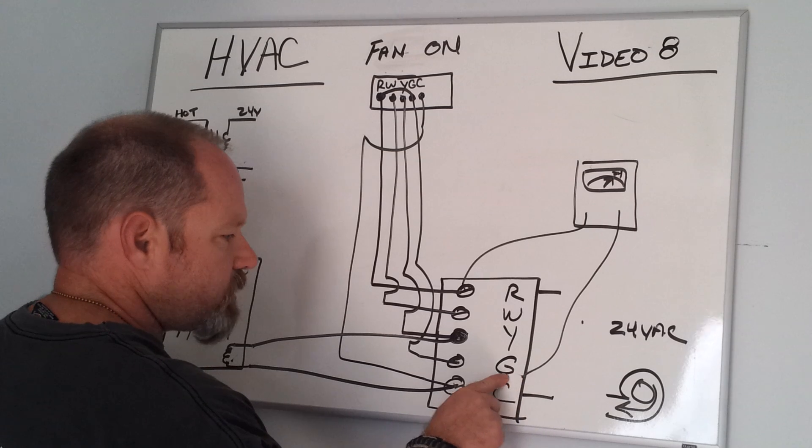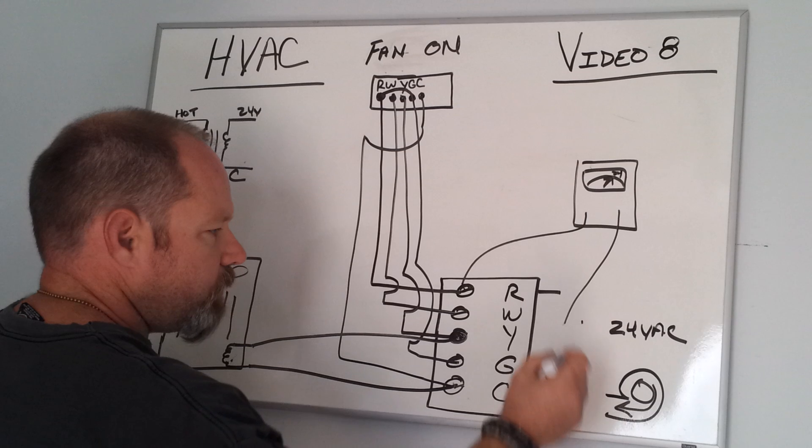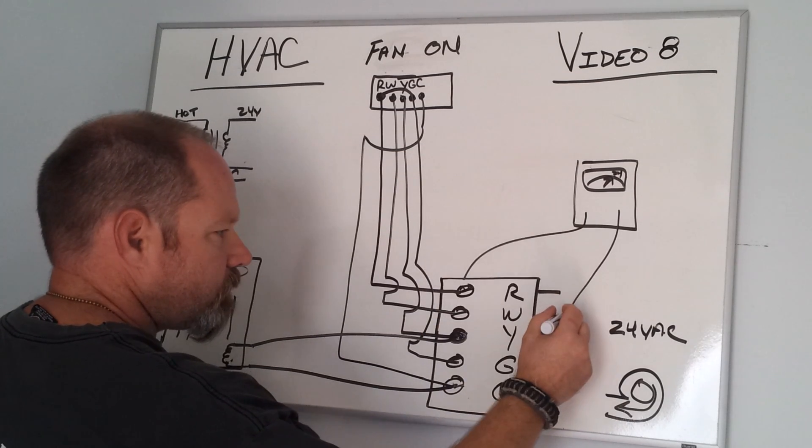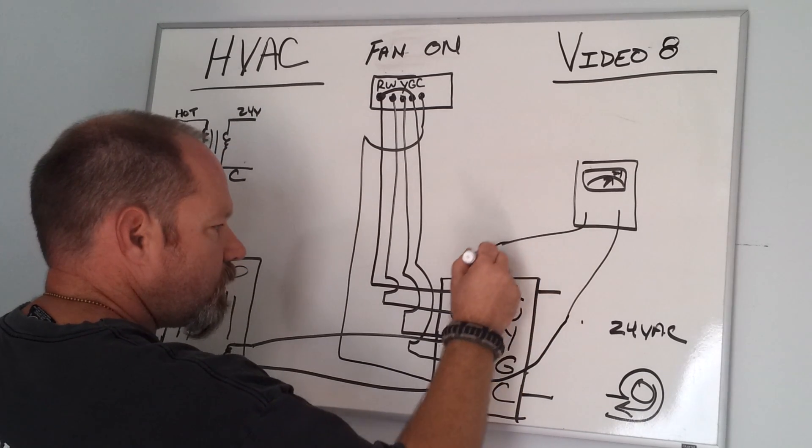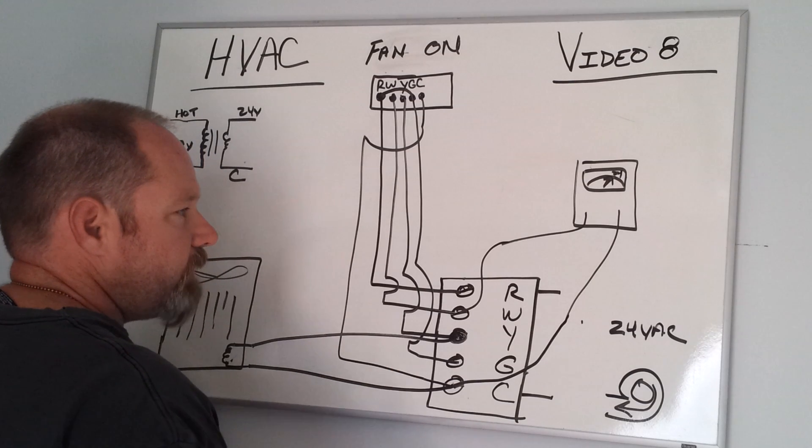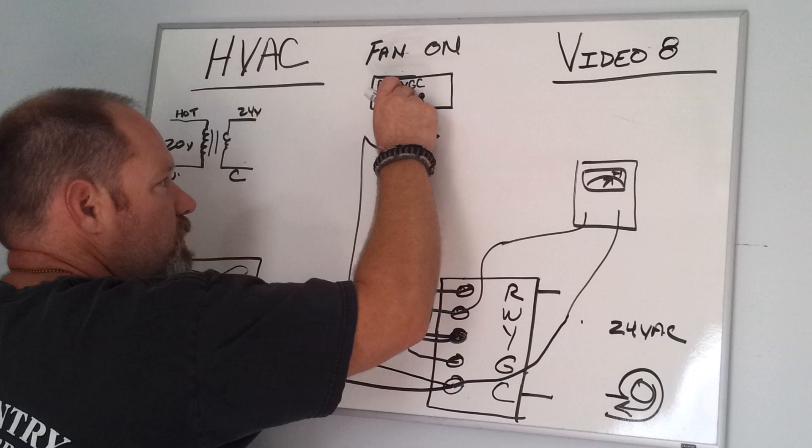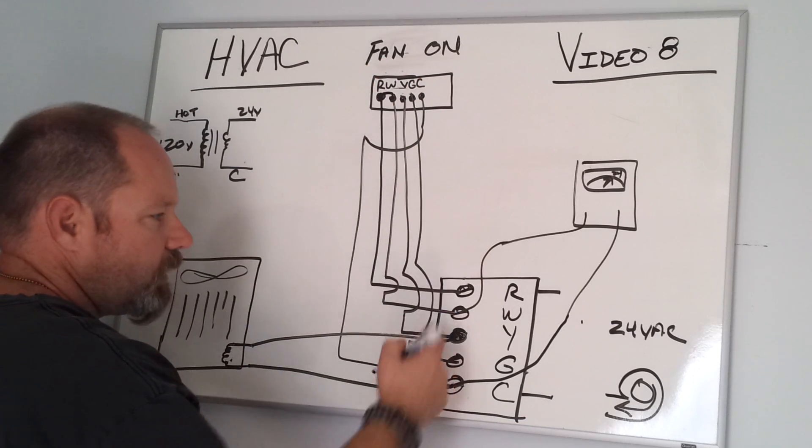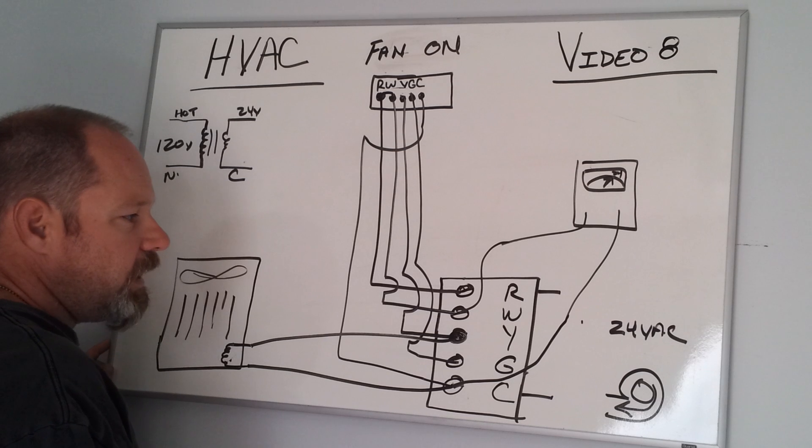Now you want to check to see if your thermostat's sending a signal. You take your other probe and keep that one on C, and you're going to take this terminal and put it on W. If you have 24 volts, that means your thermostat's doing its job—it's sending a signal down W, and you're indicating you have voltage there. So the furnace should be working or doing whatever it's supposed to do. If not, then you have to diagnose further.